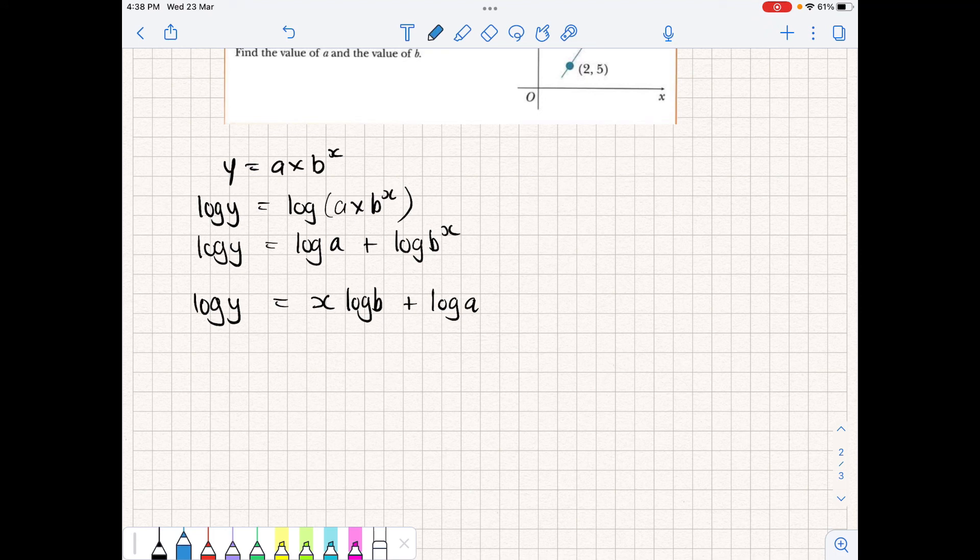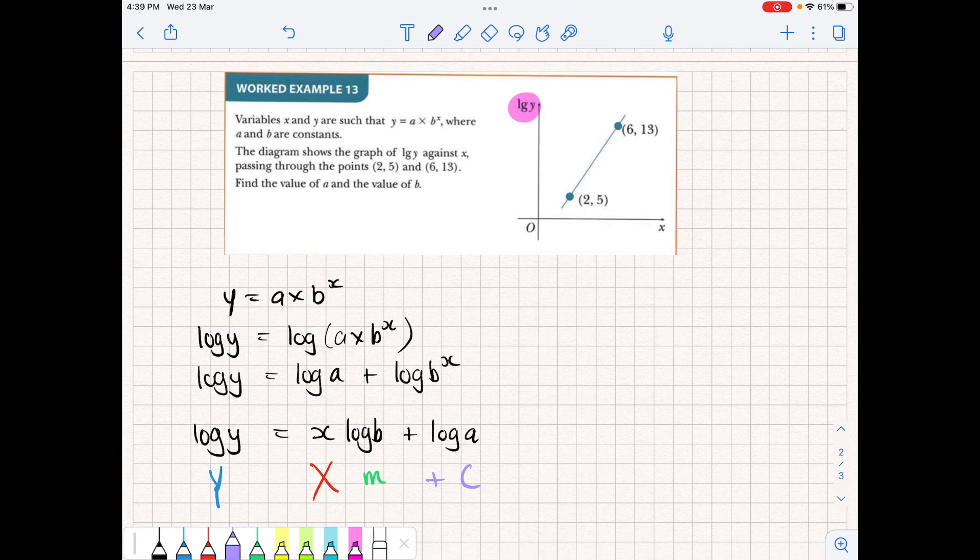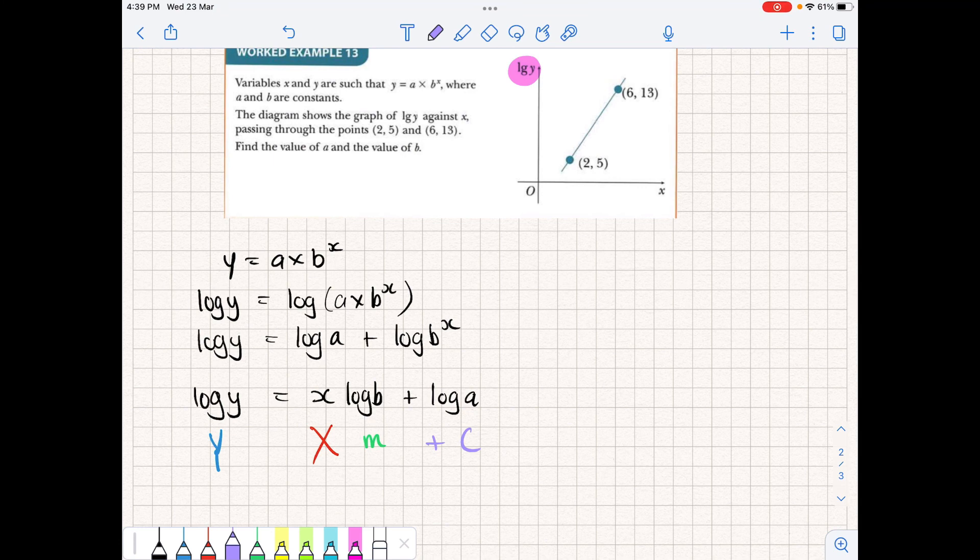Okay, so if we have to compare this to our equation, then this would be Y. This would be y, this would be m, this would be x, and this would be c. Okay, and that makes sense if we have a look at the graph we've been given. Log y is representing Y, x is representing X. Okay, so from here we can now work out what our linear equation is. We still don't know what m and c are, but we can calculate those.